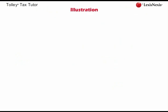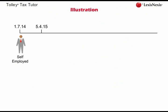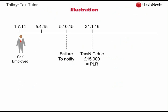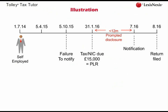We can illustrate the failure to notify penalty provisions by considering the position of Oscar. Oscar started to trade on the 1st of July 2014. He was very successful and did not have time to consider his self-assessment responsibilities. As a result, he did not notify HMRC of his self-employment by the 5th of October 2015. HMRC contacted Oscar in July 2016 and as a result, Oscar appointed a tax advisor. HMRC was subsequently notified of the self-employment. It would appear that the failure to notify was due to carelessness, as Oscar did not deliberately decide not to notify HMRC.